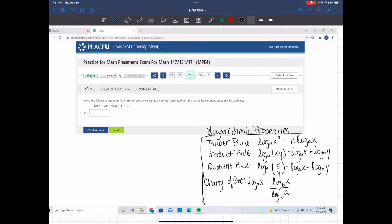This is problem 31 of 33. We want to solve the following equation for x. Enter your answers as a comma-separated list. If there is no solution, enter no solution. Log of x plus 2 plus log of x minus 1 equals 1. We want to solve for x.